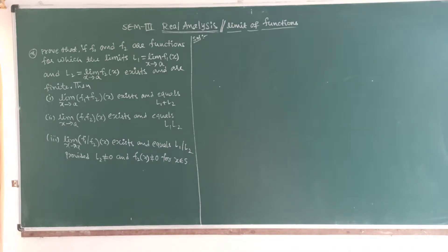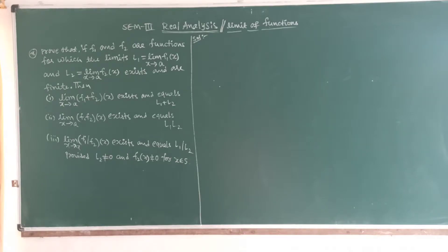True that: if f1 and f2 are functions for which the limits L1 = limit x tends to a of f1(x) and L2 = limit x tends to a of f2(x) exist and are finite, then limit x tends to a of (f1 + f2)(x) exists and equals L1 + L2; limit x tends to a of (f1·f2)(x) exists and equals L1·L2; and limit x tends to a of (f1/f2)(x) exists and equals L1/L2, provided L2 ≠ 0 and f2(x) ≠ 0.